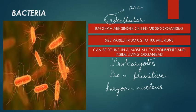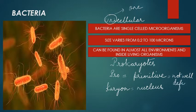'Pro' means primitive type, that is the older version, and 'karyon' refers to nucleus. Combining both meanings, bacteria belong to organisms which have a primitive type of nucleus — meaning the nucleus is not well defined and not as developed as in higher grades of organisms.